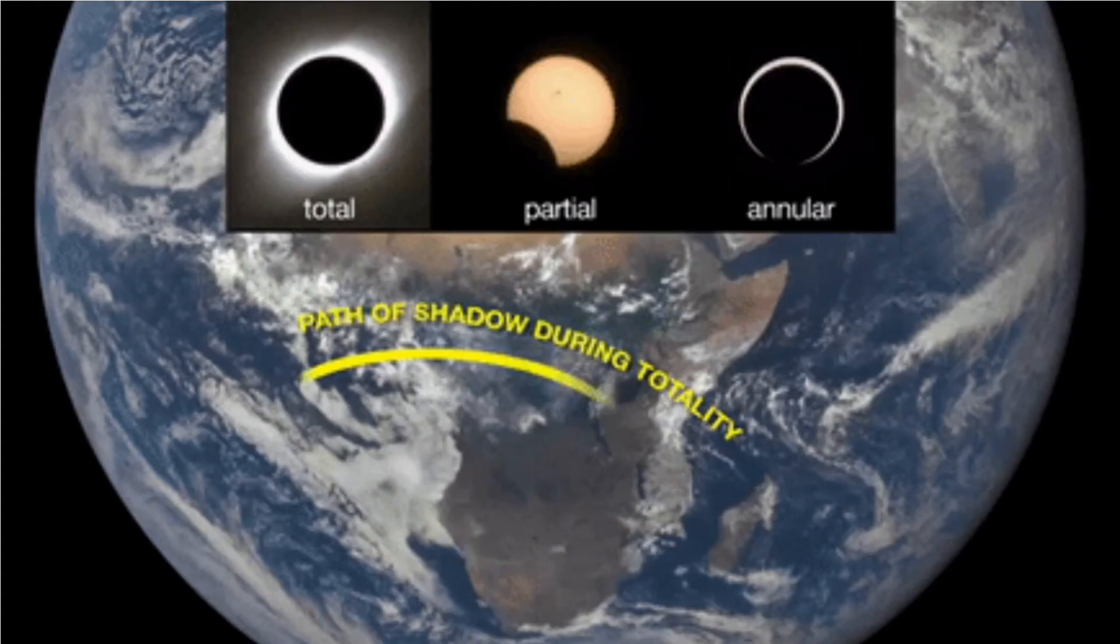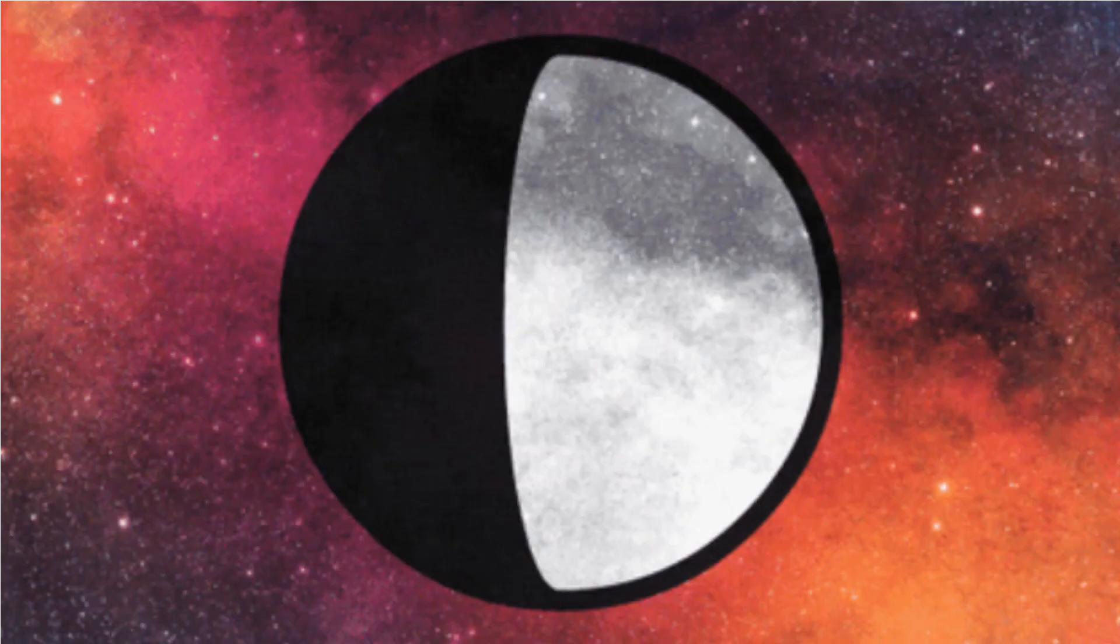The opposite can also happen each time there is a chance the earth will block sunlight and we call it lunar eclipse. Both the eclipses can exist twice a year.